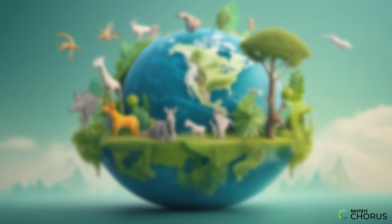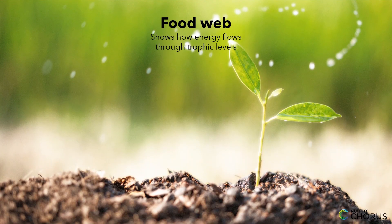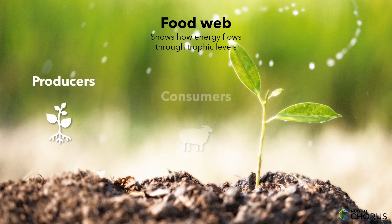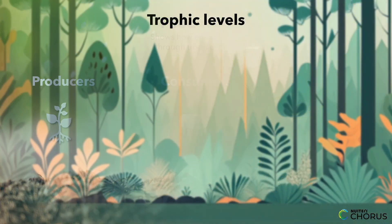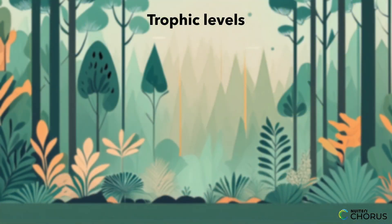To start, let's define our concepts. A food web is like nature's intricate dance, showing us how energy flows through different trophic levels. Producers, consumers, and decomposers each have a role in maintaining this delicate balance. But why does this matter? Let's see how these concepts play out in different ecosystems.